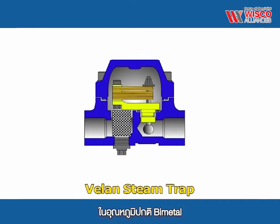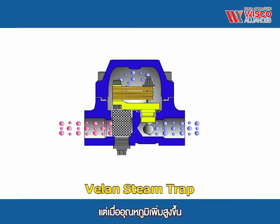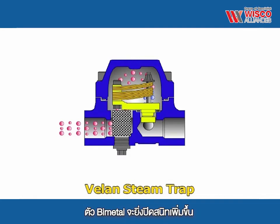At ambient temperatures, the bimetal element is relaxed and the valve is open wide, allowing for rapid discharge of cold condensate and non-condensable gases at startup. As the temperature of the condensate increases, the bimetal element pulls the valve closed. In the presence of live steam, the valve remains closed tightly.